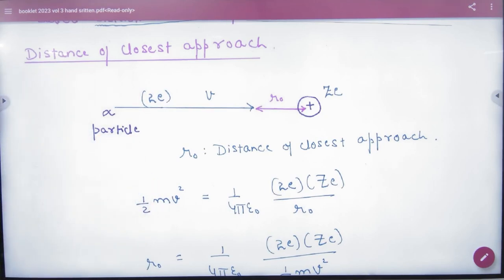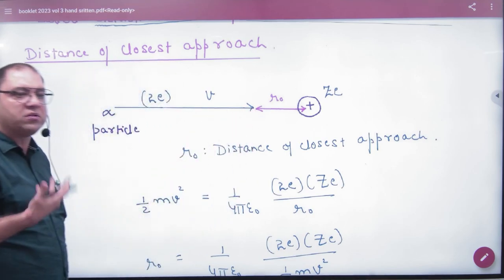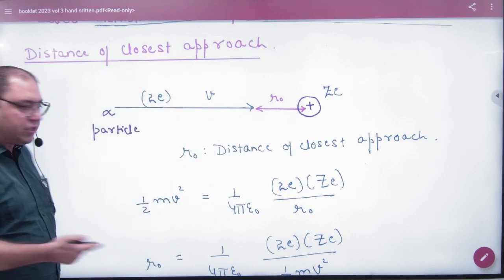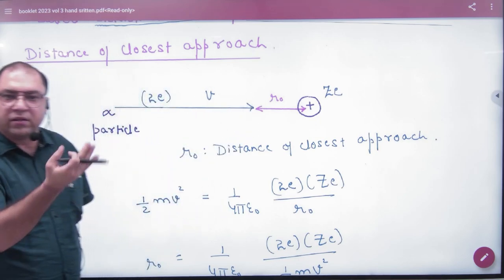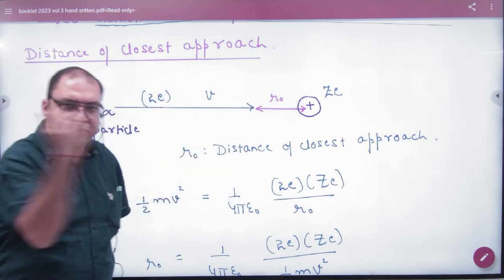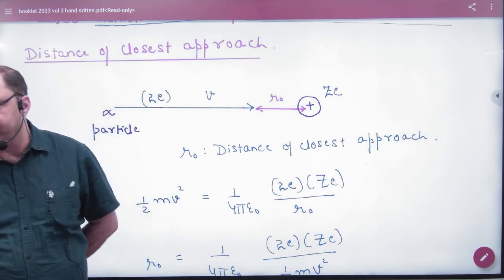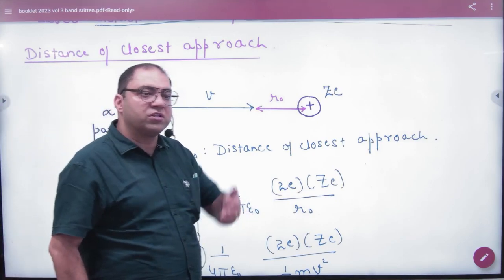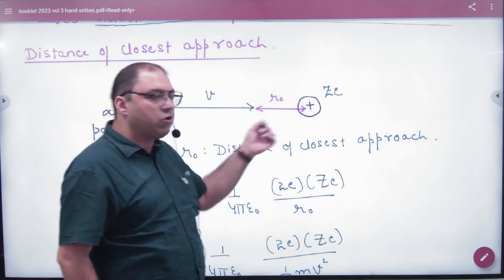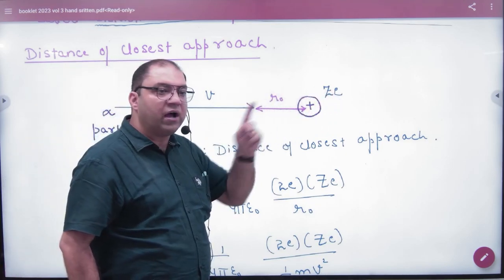Conservation. According to energy conservation, when alpha particle was kinetic, it was half mv squared. Here kinetic becomes zero for an instant and then energy has been converted into electrostatic potential energy. 1 by 4 pi epsilon naught, 2e into Ze divided by r0.